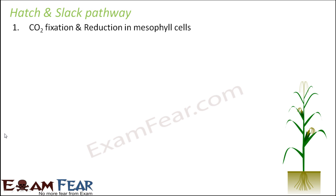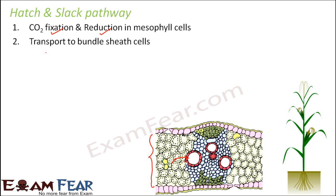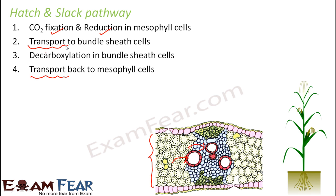The steps of the Hatch and Slack pathway are: carbon dioxide fixation and reduction in mesophyll cells, transport to bundle sheath cells, decarboxylation in bundle sheath cells, and then transport back to mesophyll cells. The last step is regeneration, because it is a cycle and must return to the first step. Transportation between bundle sheath and mesophyll cells plays an important role in this pathway.